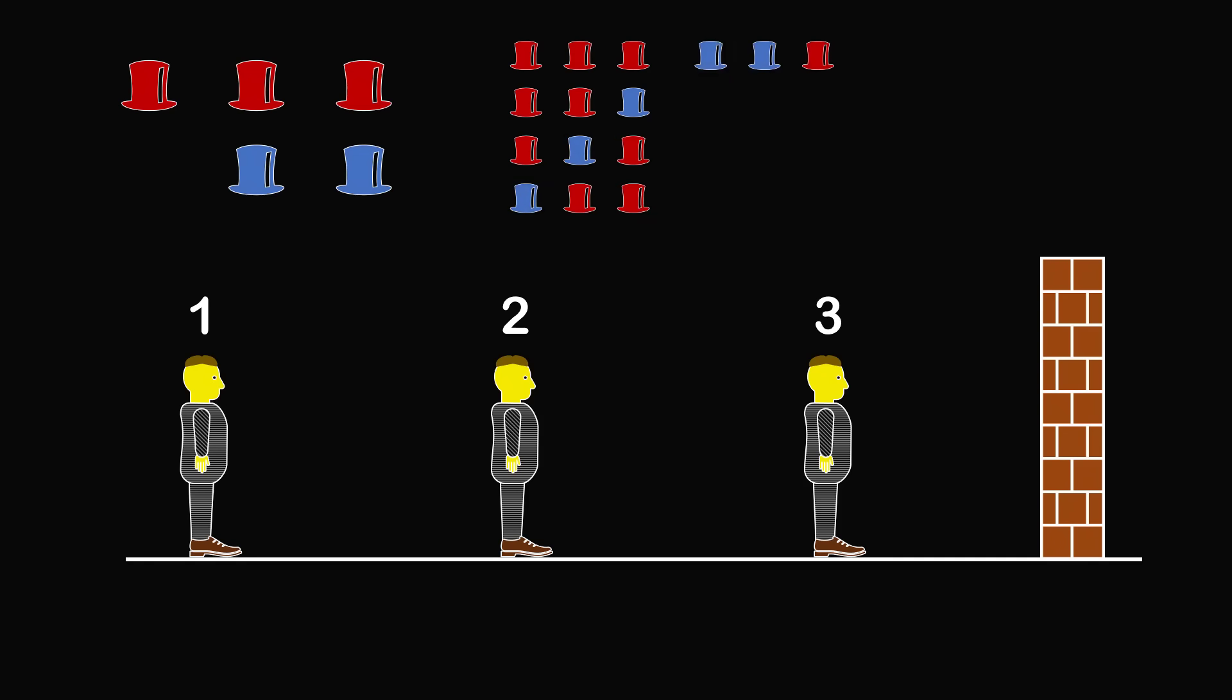We could also have 2 blue hats and 1 red hat. The red hat can also be placed on 3 different prisoners, so it could be prisoner 3, prisoner 2, or prisoner 1. We could also have all 3 blue hats.